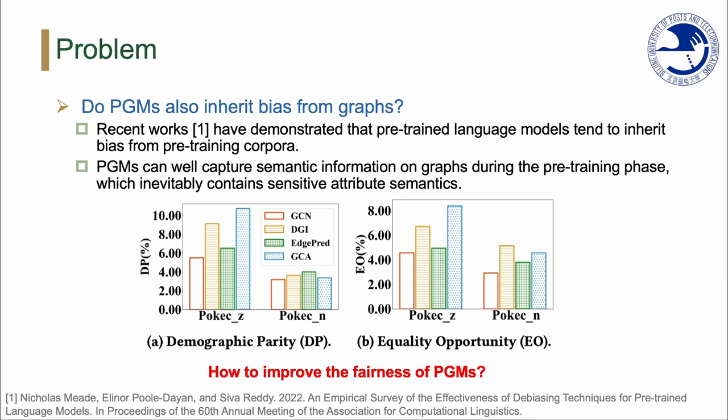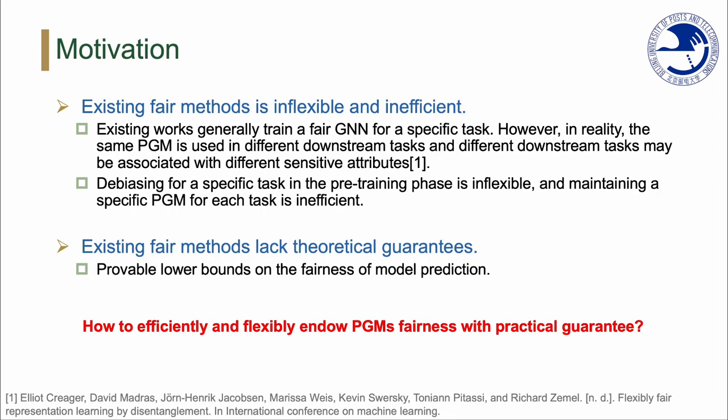A further question naturally arises: how to improve the fairness of PGMs? Although substantial methods have been proposed for developing fair GNNs, directly employing them to improve the fairness of PGMs is inflexible and inefficient.